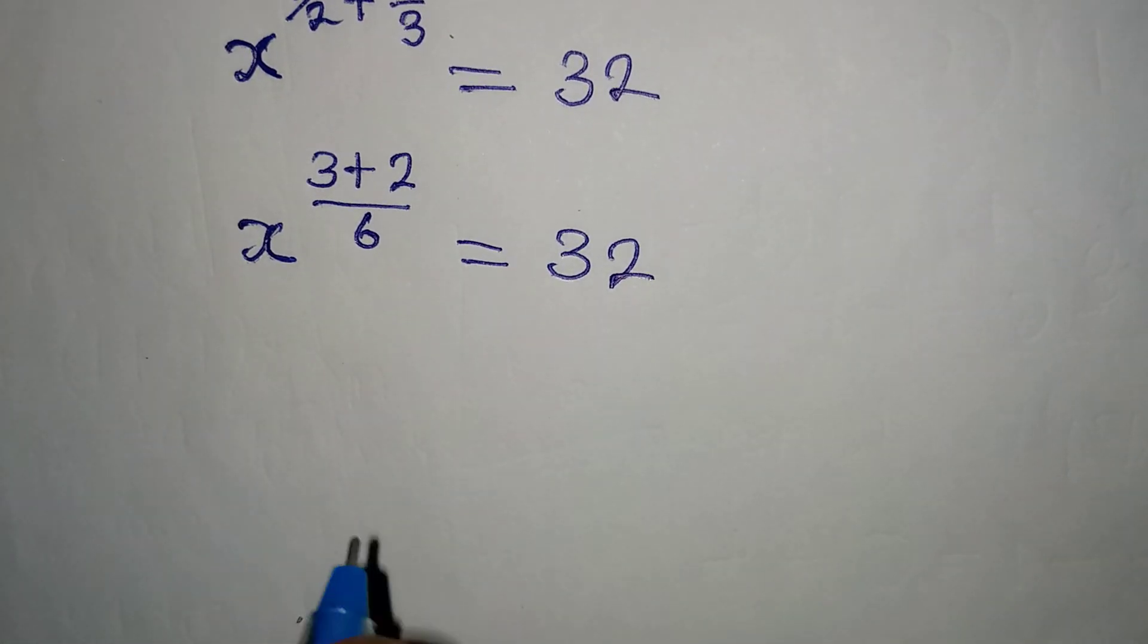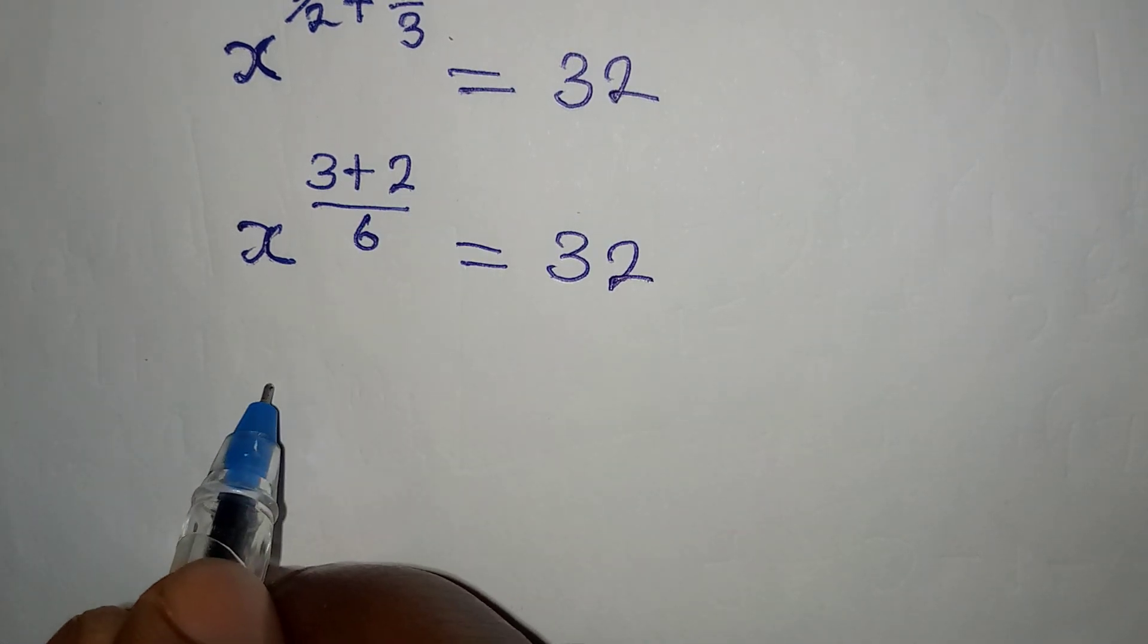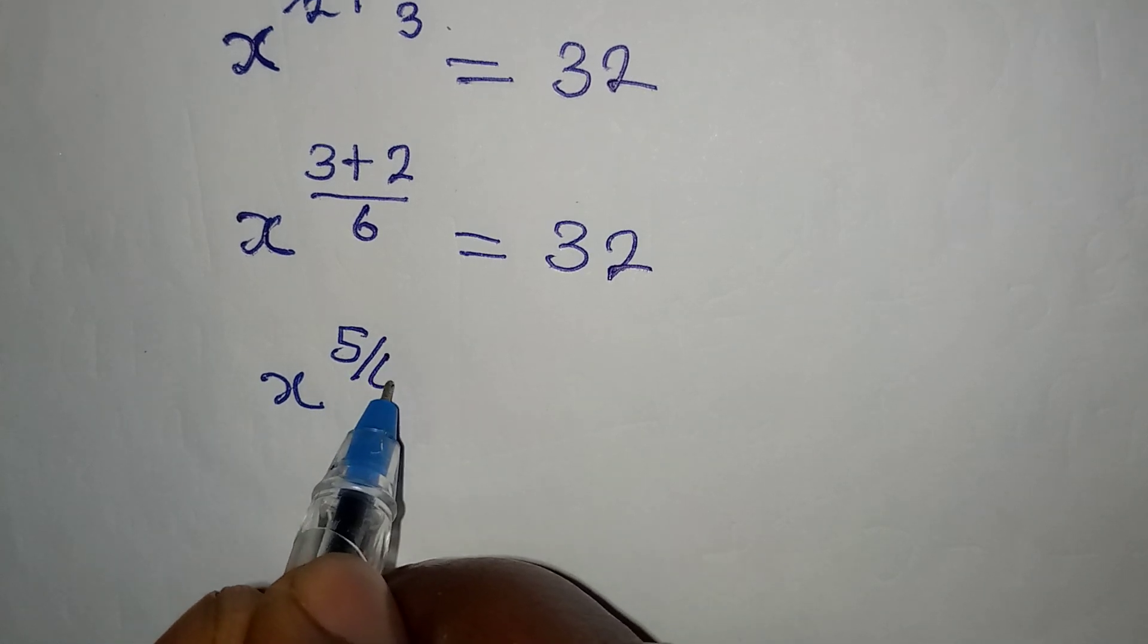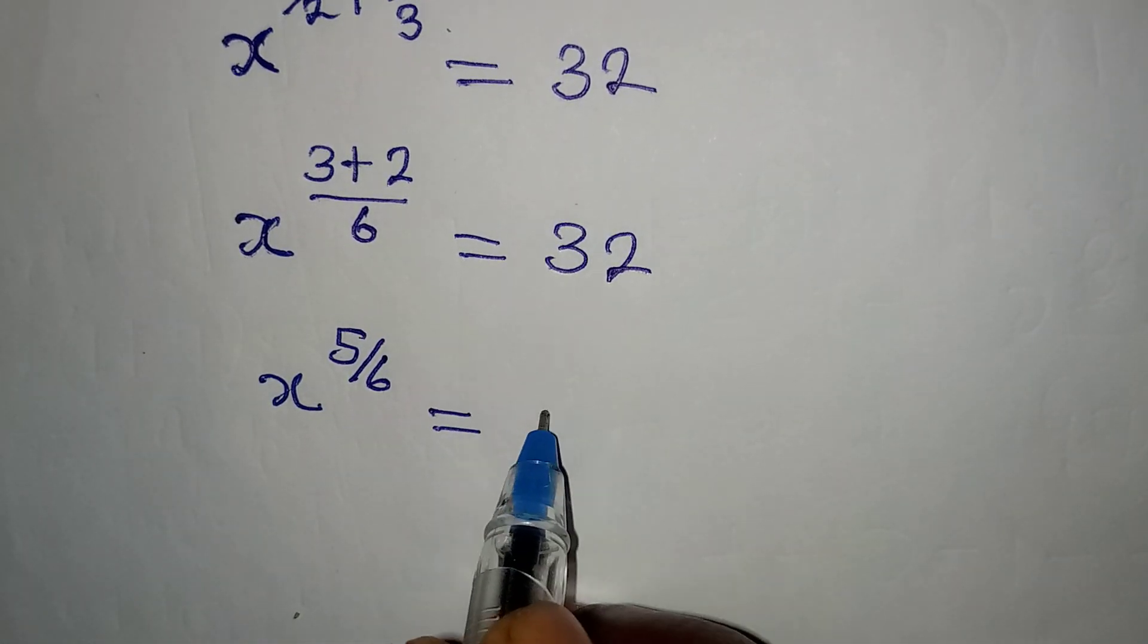Now the next thing I will do is to add the powers. So we have x to the power of 5 over 6 and it is equal to 32.